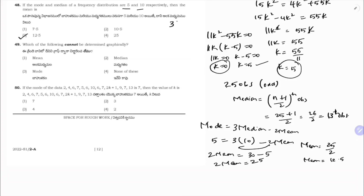Which of the following cannot be determined graphically? Median can be found using ogive. Mode can also be found graphically. But mean cannot be determined graphically. Correct option is 1.